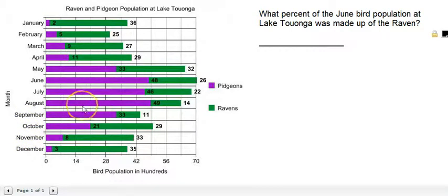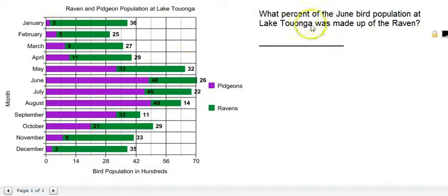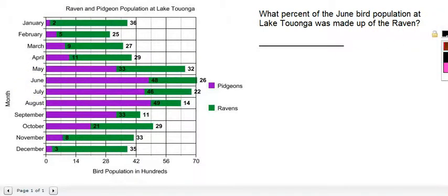The question is: what percent of the June bird population at Lake Tuonga was made up of the raven? We can see the chart here showing the raven and pigeon population at Lake Tuonga. We're going to look at June, because that is where we have been directed by the question.